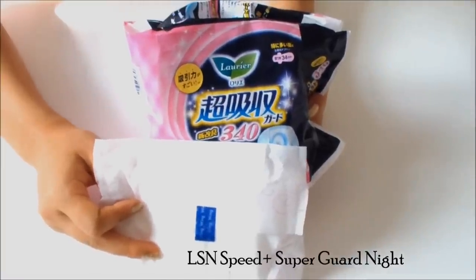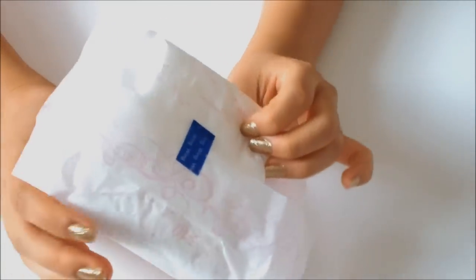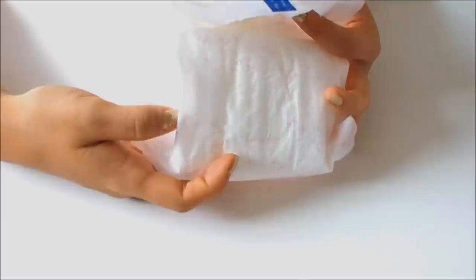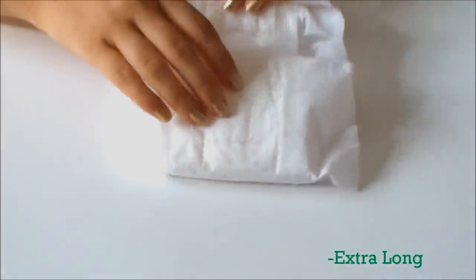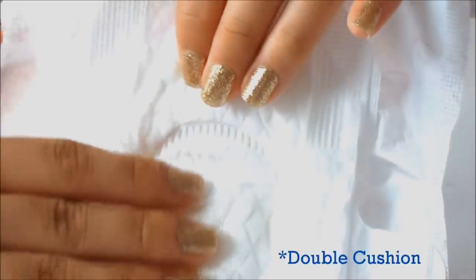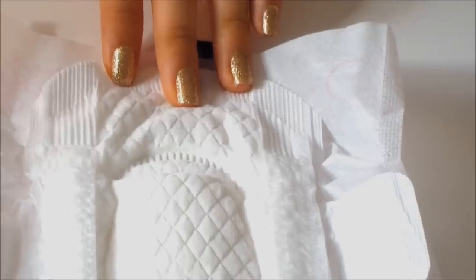The next one is Speed Plus Super Garden Eye. This is one of the innovative pads with a pretty cool design. First, it is extra long, so during the night you don't have to worry about leaking. And it has a double cushion, so double the protection during the night.